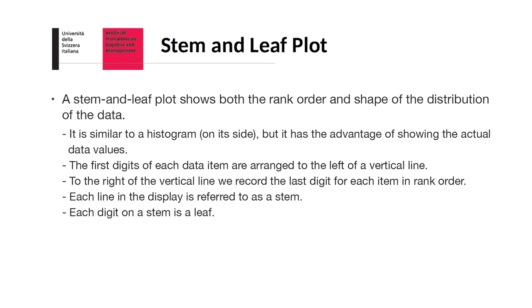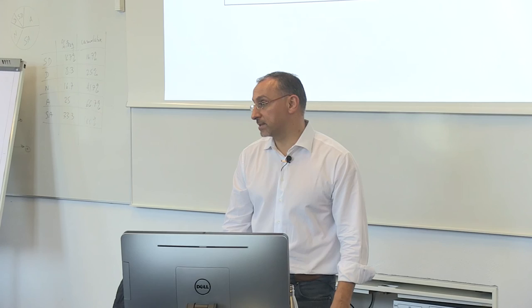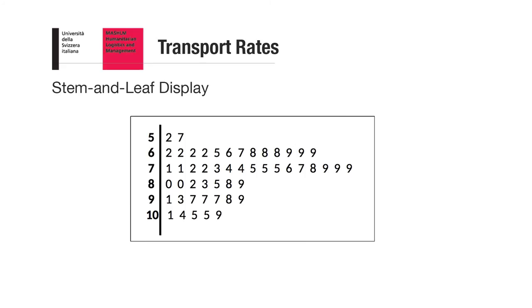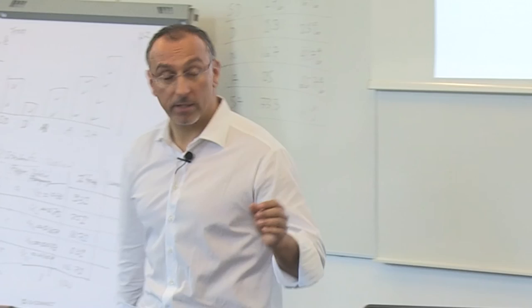So if we would display the data that I was showing you for transport rates, it would look like this. So 52 and 57. And then the nice thing about this as well is that you can immediately see that 70 is the mode, right? So most of the rates fall in that category of the 70s.